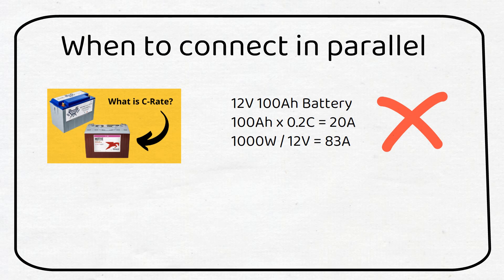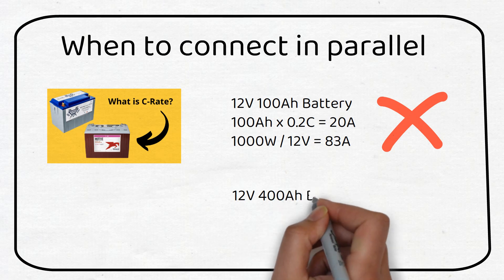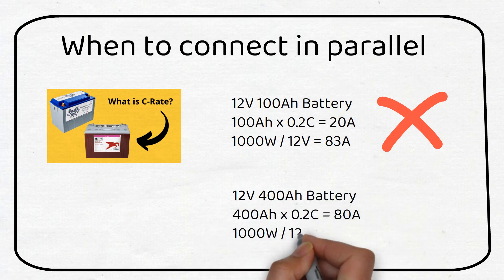It's much better to have 4 batteries in parallel if you have already bought your 12 volt inverter. Otherwise the voltage of the battery should be increased. Let's use 4 batteries in parallel and do the same calculation. 400 amp hours times 0.2C is 80 amps. We can see that 80 amps is about what the inverter will draw. This is a better configuration.